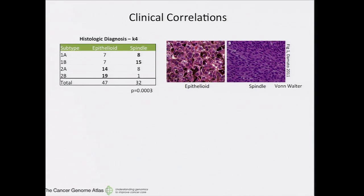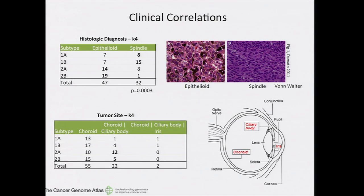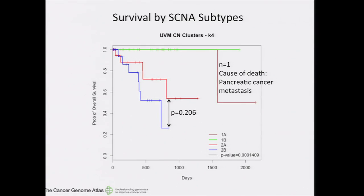Here are some clinical correlations to the copy number subtypes. Epithelial tumors, which tend to have poor prognosis, are found more commonly in subtype 2A and 2B, whereas spindle tumors are found more commonly in 1A and 1B. Subtype 2 tumors are found more commonly in the ciliary body as well as the choroid, whereas subtype 1 tumors are found mostly in the choroid. Most importantly, subtype 1A and 1B tumors have significantly better survival than 2A and 2B. There's at least a hint that 2B, characterized by increased aneuploidy and high 8Q gain, may have worse overall survival than cluster 2A.